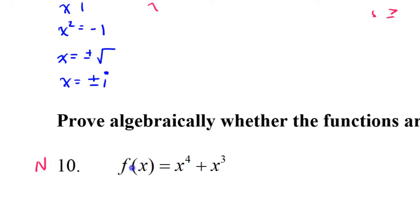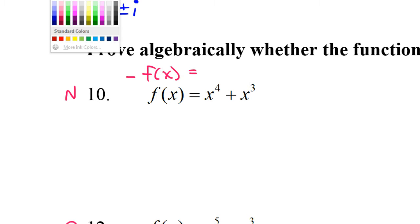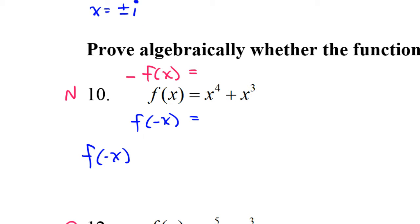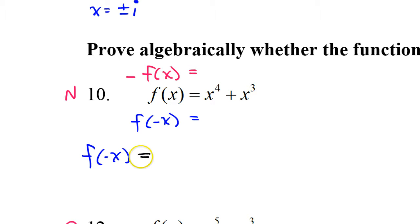We know the answers ahead of time, but to prove it, here's what you have to do. In addition to the original function, we need to generate two additional functions. We need to find the opposite function, which is negative f of x, and we need to find the function f of negative x — in other words, what you get when you plug in negative x.